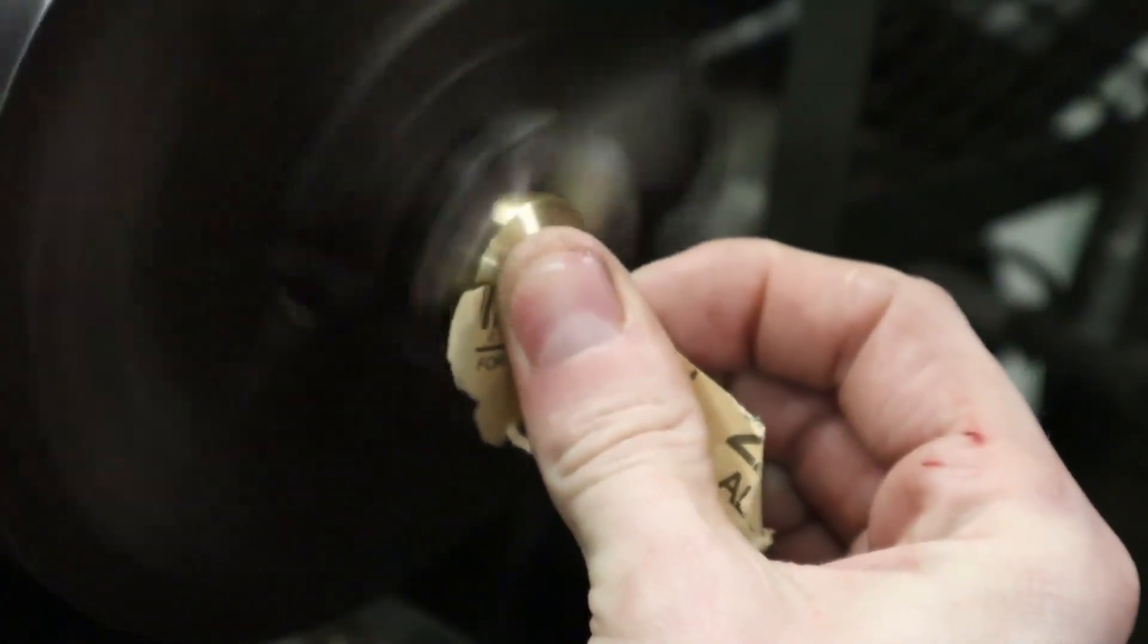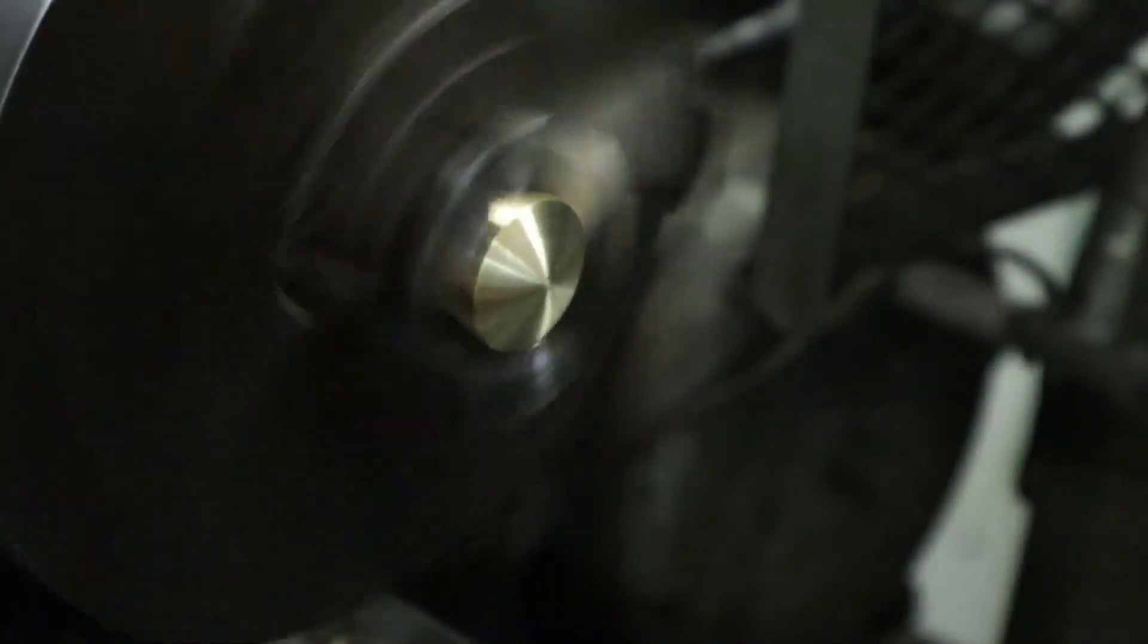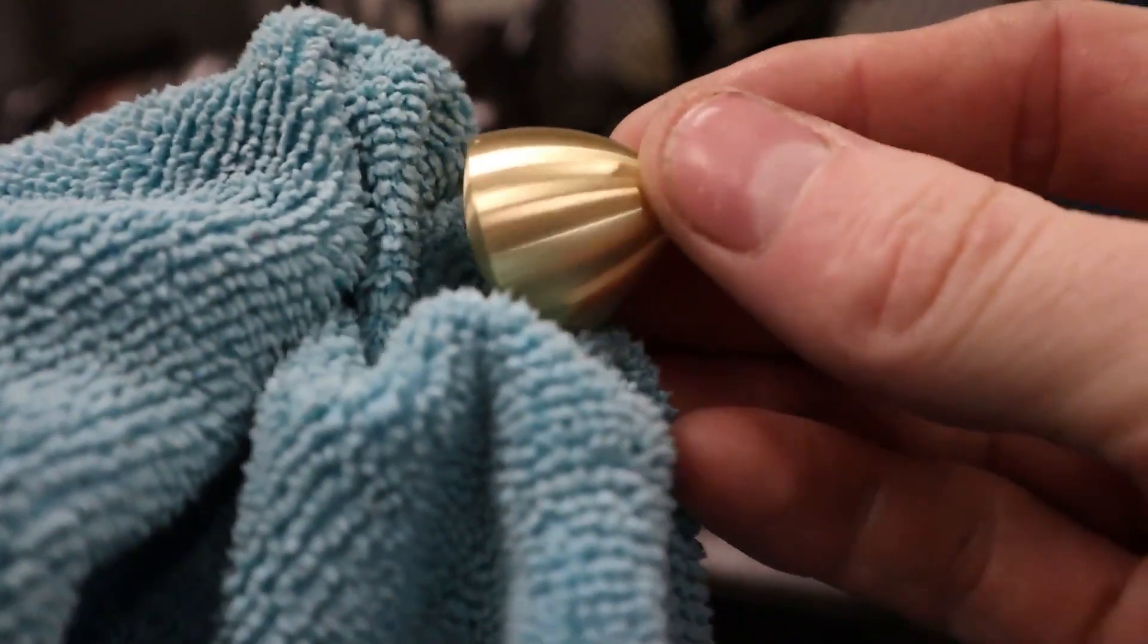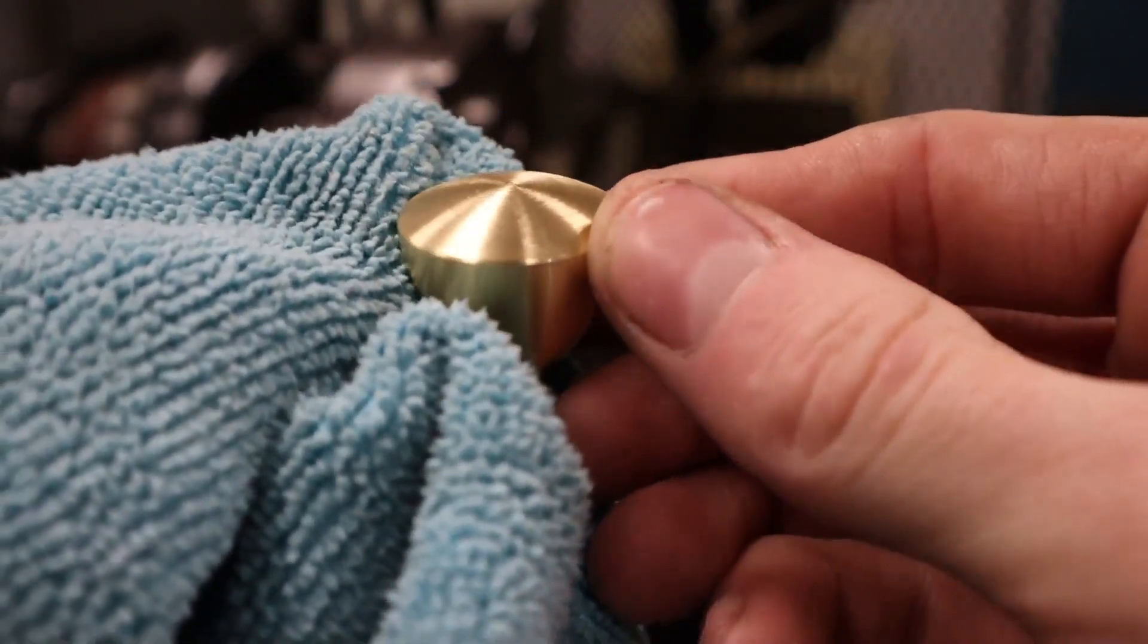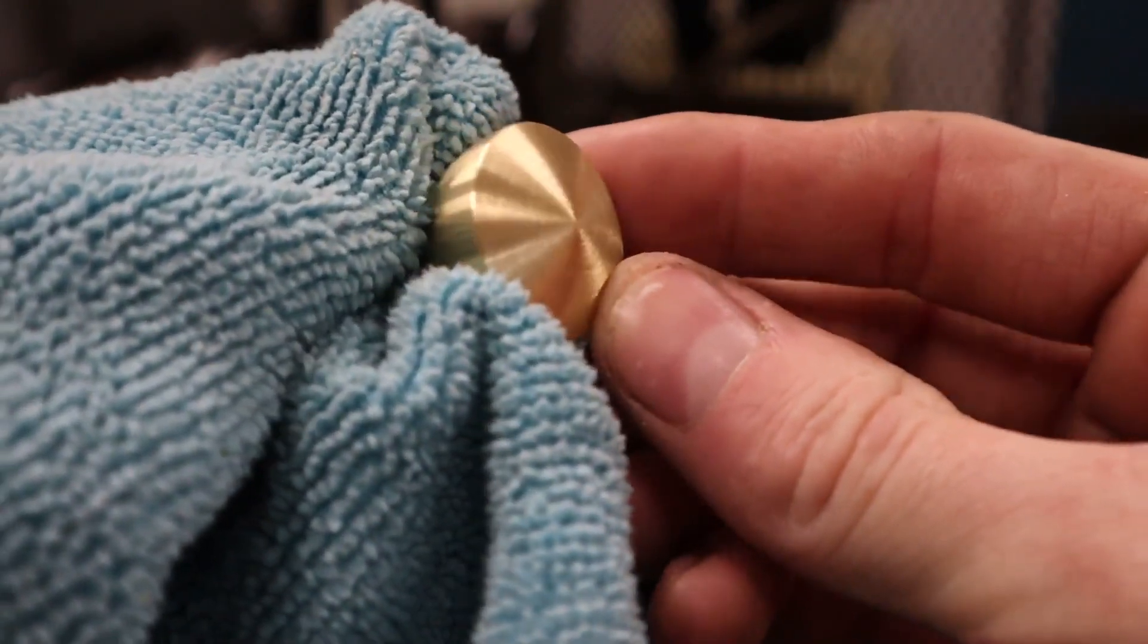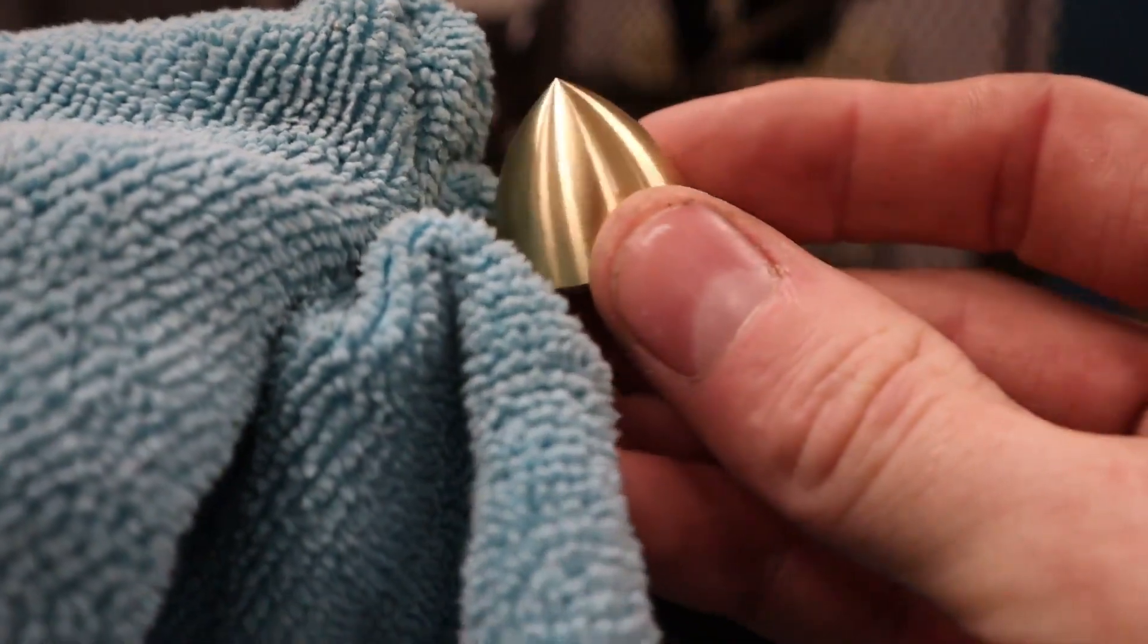By the way, I barely tighten this thing down in the manual lathe so it doesn't mar the edges of the brass. So I put the bar feeder on and ran a few sets of these and then that was it. There's not much to it.